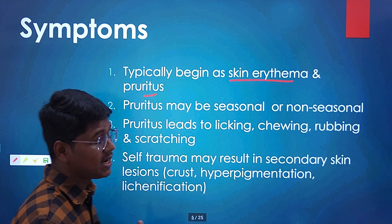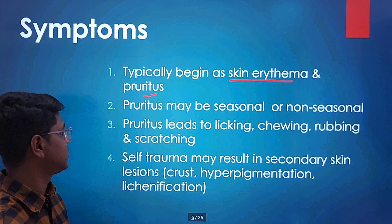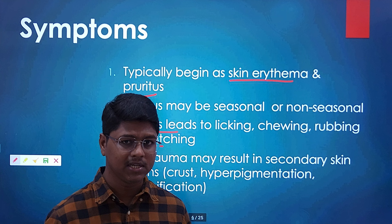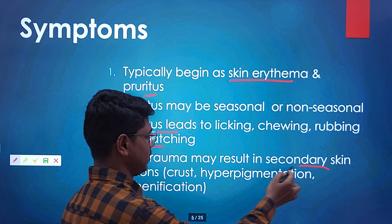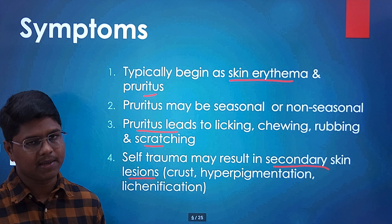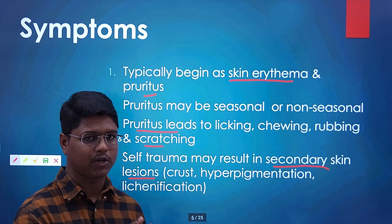The pruritus can be seasonal or non-seasonal. The animal owner has to be very observant, and the history is very important for diagnosing this disease. Pruritus leads to behavioral changes like licking, chewing, rubbing, and scratching, which may damage the skin and lead to secondary skin infections. In long-standing cases, you will find crusts, hyperpigmentation, and lichenification — the last stage when left untreated. Lichenification is skin thickening; hyperpigmentation causes the skin to turn black.